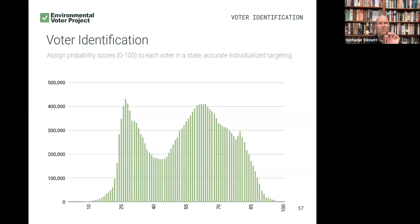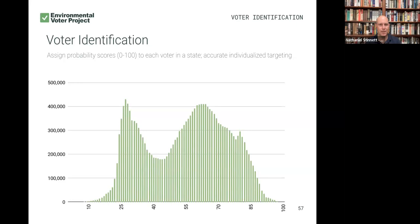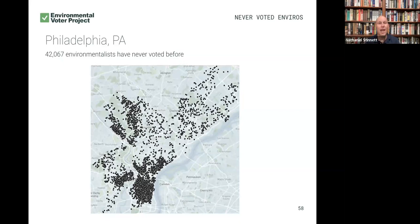But what this individualized targeting allows us to do is know — not to be creepy about it — by name and street address, who all of the non-voting super environmentalists are. As an example, you're looking at a map of the 42,067 registered voters in Philadelphia who have a greater than 85% likelihood of listing climate or other environmental issues as their top priority, yet have never voted before. They're registered to vote, but they haven't voted. We literally know these people by name and street address, and we often have their telephone numbers. This allows us to canvas, call, mail, and send digital ads to these people with behavioral science-informed messaging designed to do just one thing: turn them into better voters.